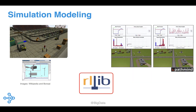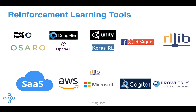Through San Francisco Bay Area startups Pathmind and Bonsai — now part of Microsoft — I've already seen early glimpses of how RL is being incorporated into simulation modeling software. Both Pathmind and Bonsai use RLlib, a very popular open-source library for reinforcement learning built on top of Ray. We are beginning to see more tools, both open source and software-as-a-service, for reinforcement learning, paving the way for practitioners who want to experiment with RL but may not have the expertise to build their own suite of tools.